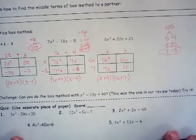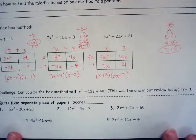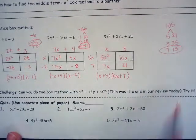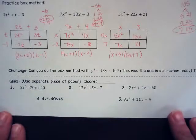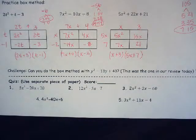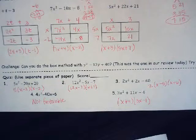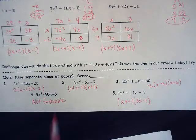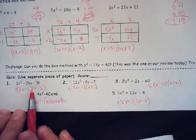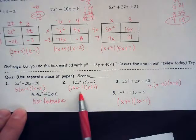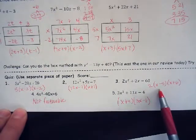Challenge question: can you do the box method with the simple example from our review? Try it, then try this quiz — I'm going to pause and put up the answers. You should be getting about 80% if you do it correctly. Here are the answers: the first one didn't actually need the box method — just factor out the greatest common factor. Number two used the box method.